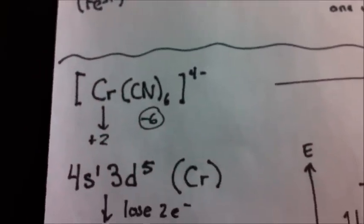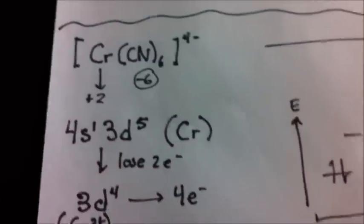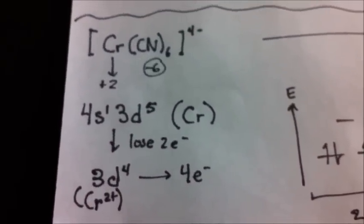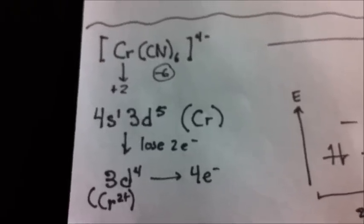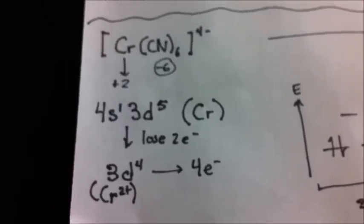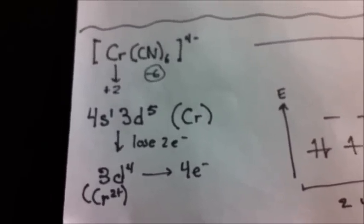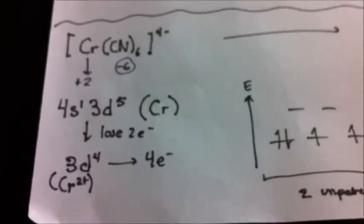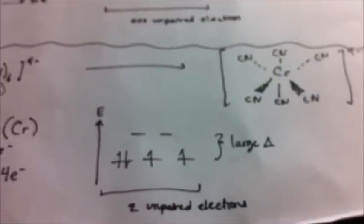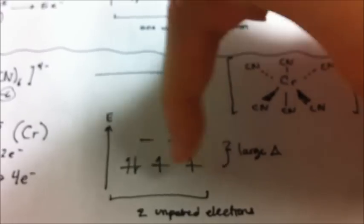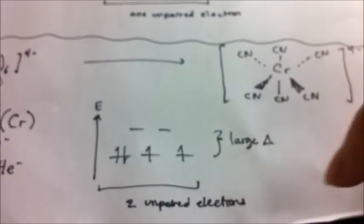So for chromium, we have 4s¹, 3d⁵. To make it an ion, we lose 2 electrons: minus 1 from our 4s¹ and minus 1 from our 3d⁵, giving us a 3d⁴ electron configuration — meaning 4 electrons to fill in. Because cyanide is a strong field ligand, there's a large delta value, so we fill in: 1, 2, 3, 4. That gives us 2 unpaired electrons.